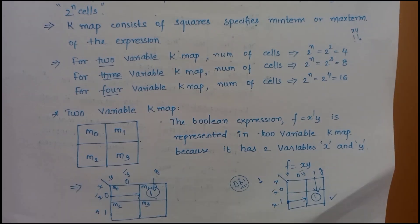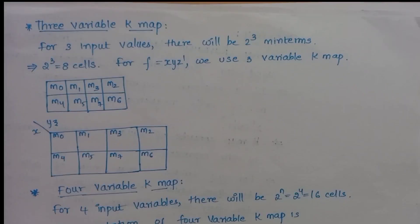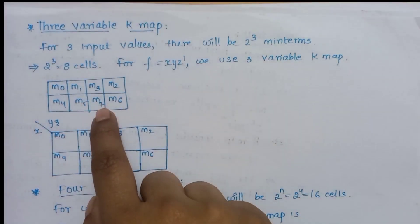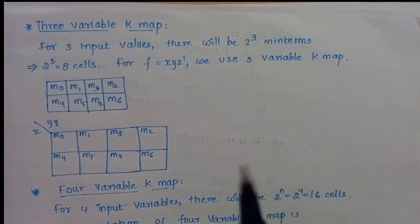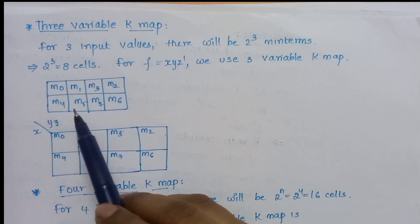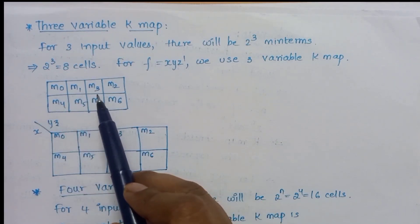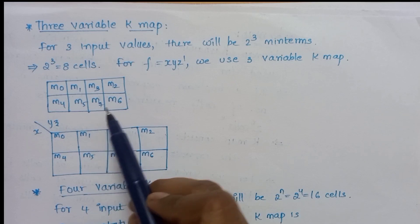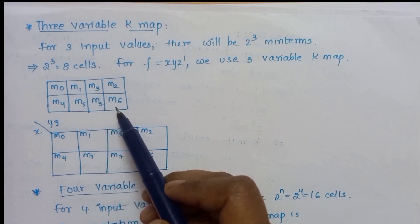Next, we have the 3-variable K-map. For three input values, there will be 2^3 minterms. So when there are 3 variables, 2^3 equals 8 cells are required, labeled m0 through m7. Note that positions 2 and 3, and 6 and 7 are exchanged.